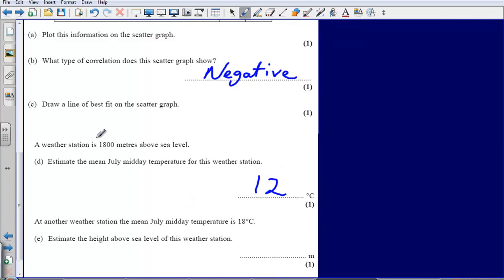So my estimate here would be 12 degrees. You will be given some degree of leniency. You will be given some leniency in your answer here. It would be between 11 and 13 will be a correct answer. So any answer between 11 and 13 will be fine.